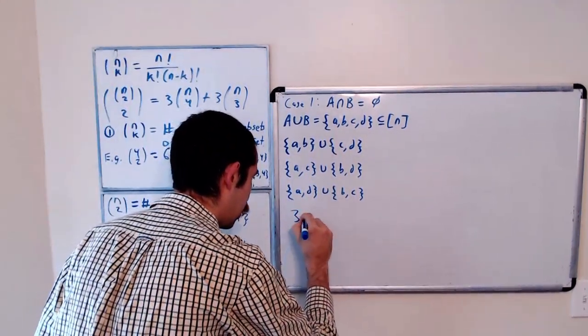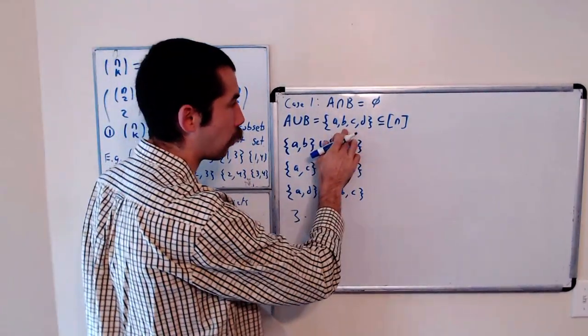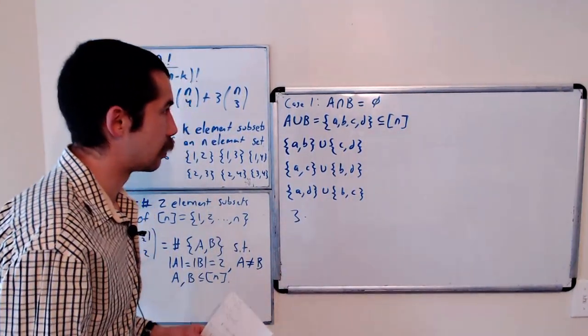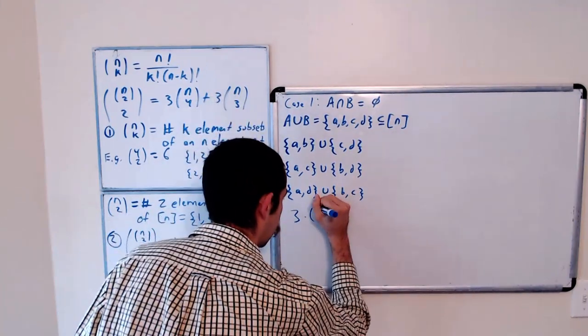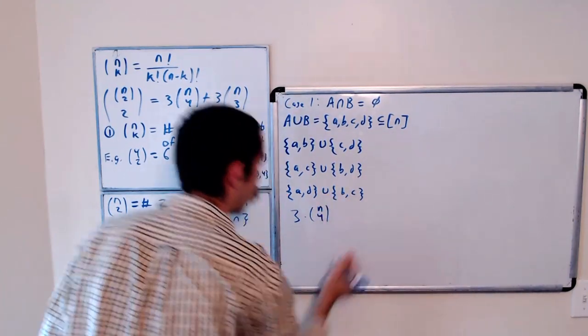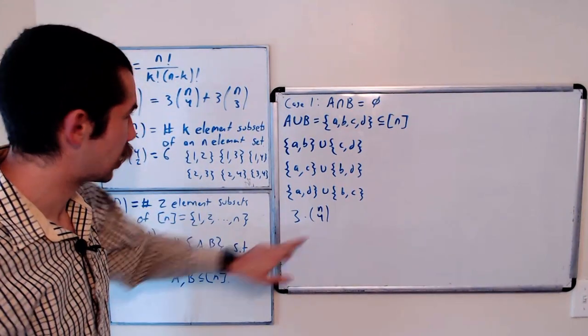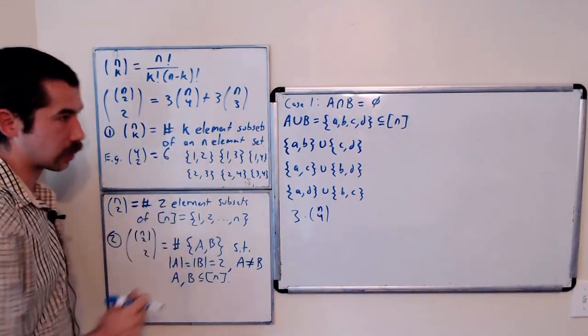So there's 3 cases. So that's a 3. Times, well, each 4-element subset of 1 through n has to be counted. So 3 times n choose 4. So case 1 happens 3 times n choose 4 times, which is exactly this term here. That's great.